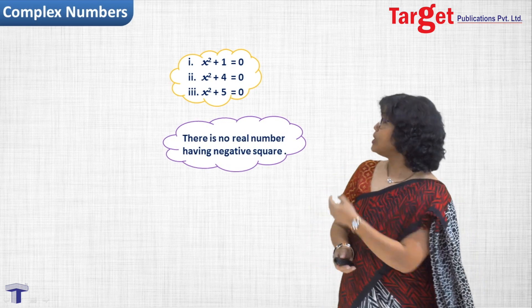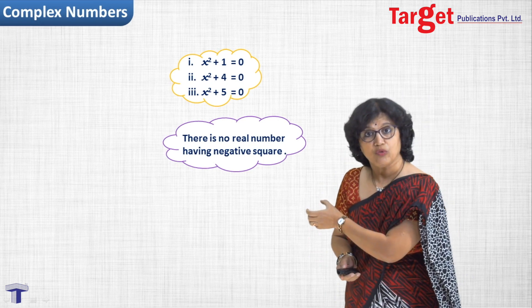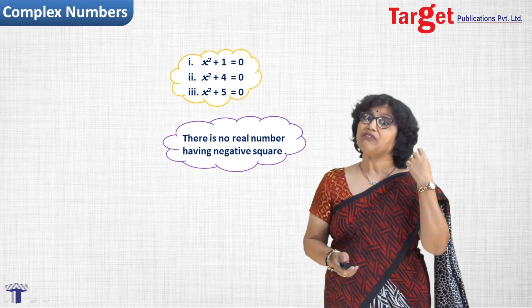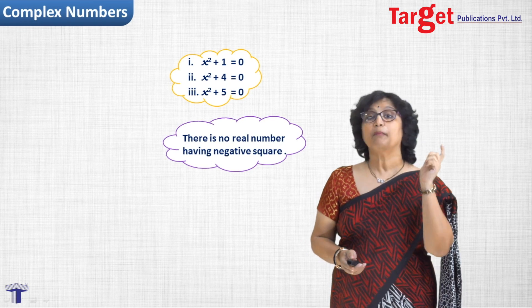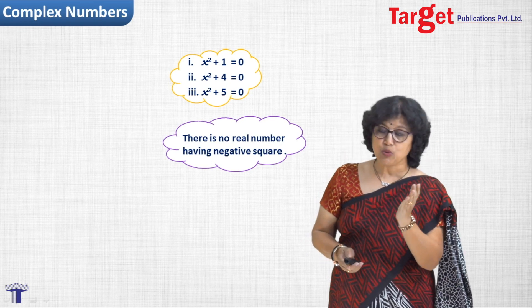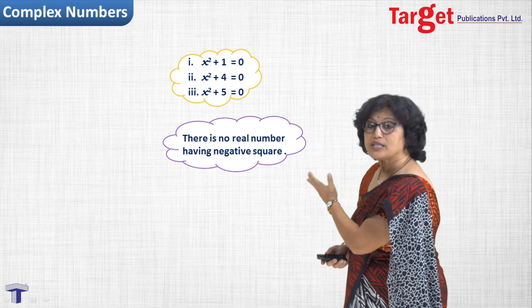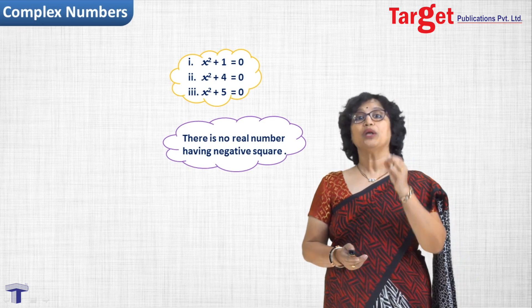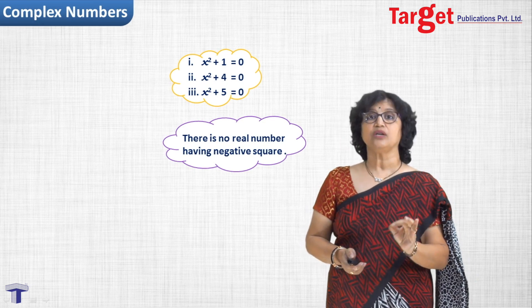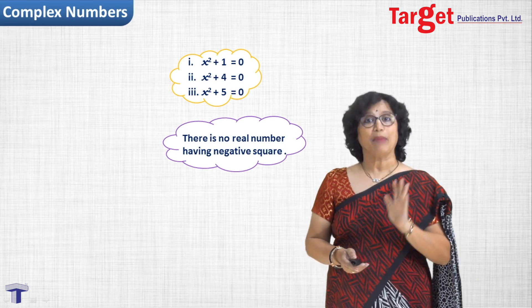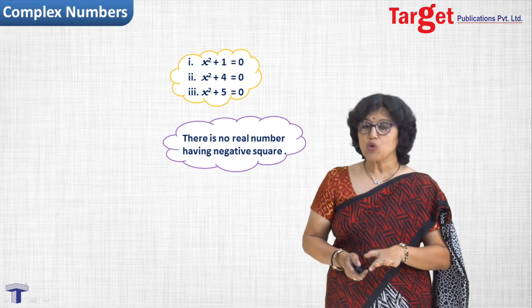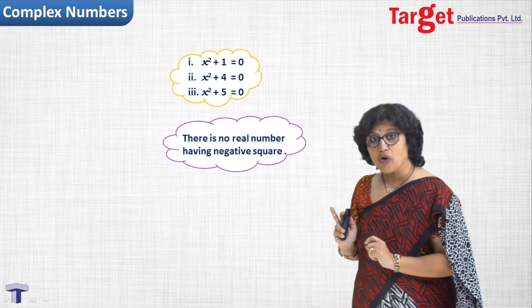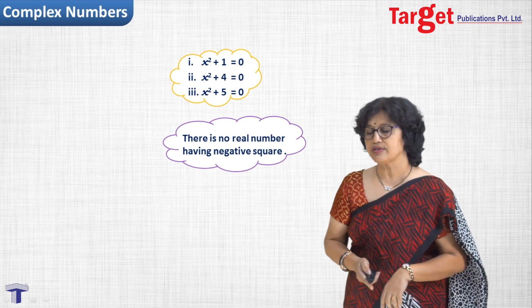Why do I say so? Because if x squared plus 1 equal to 0 is to be satisfied, then x squared will have to be minus 1, so that minus 1 cancels plus 1 to give answer 0, and there is no real number x whose square is minus 1. So obviously we do not have any solution in the set of real numbers to these equations.